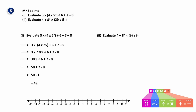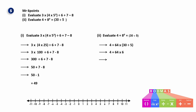Question 5b: evaluate 4 plus 8² times (30 divided by 5). Start with the brackets: 30 divided by 5 is 6. Then 8² is 64. So it becomes 4 plus 64 times 6. Multiply: 64 times 6 is 384, giving 4 plus 384 equals 388. That concludes this topic on basic arithmetic — make sure you practice as many questions as possible and master the number line and BODMAS.